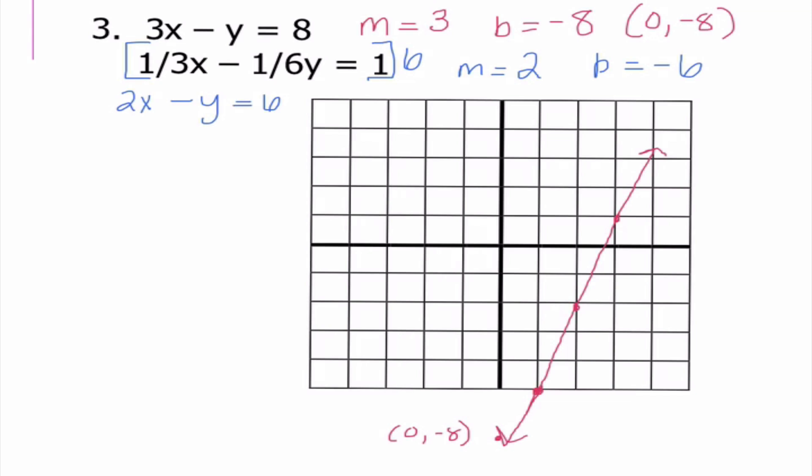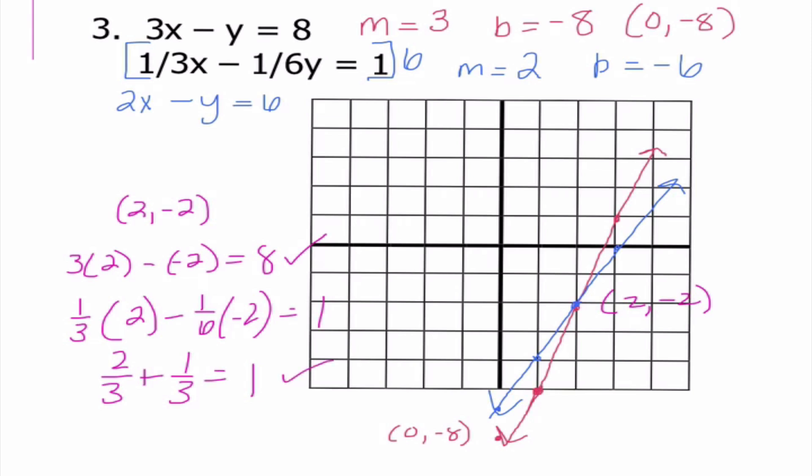Same idea with my next one. Negative 6 would be somewhere down here, and I need to go up 2 and over 1, up 2 over 1, up 2 over 1. And it looks like we have a solution here. In fact, to me, that looks like those intersect at (2, -2). So I know the way I double-check this is by substituting it. So 3 times 2 minus negative 2 equals 8. That works. This one's going to be fun. 1/3 times 2 minus 1/6 times negative 2 equals 1. Is 2/3 plus 2/6 is 1/3 equal to 1? It is. So that confirms that (2, -2) is our solution.